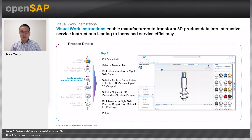Step three is where users can enhance the visualization using the authoring tool within Enterprise Product Development visualization. For example, setting appearance properties — users can apply different materials or change colors to make the visualization look more realistic.